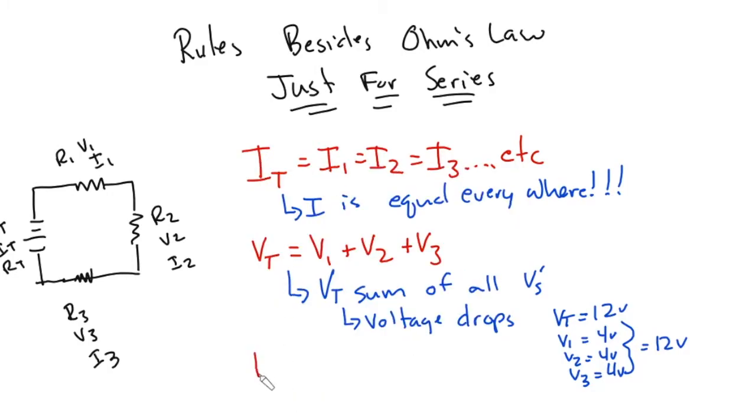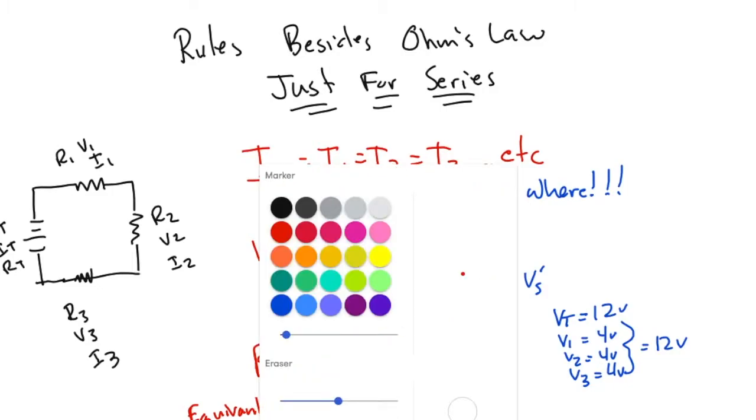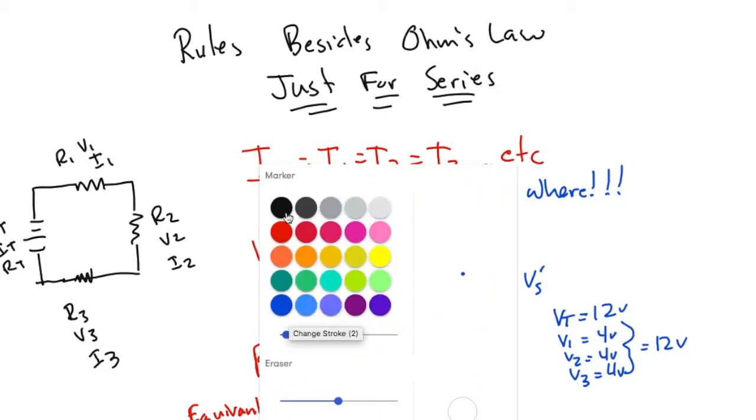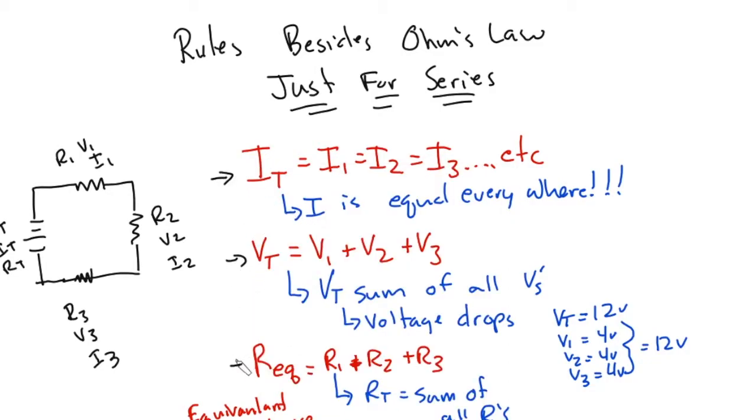And the last is we need R total. But like I just said, there's a different name for R total, and we call this REQ. And all that means is this is an equivalent, that's called the equivalent resistance. REQ is just a fancy name for R total. And in series, R1 is the sum again, R2 plus R3. So as we saw with voltage, these are going to be R total equals the sum of all Rs. These are all on your reference table.